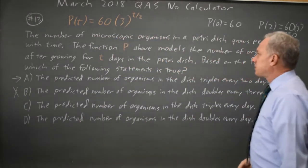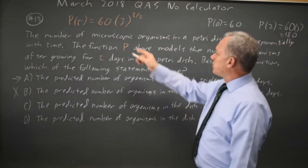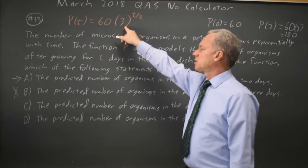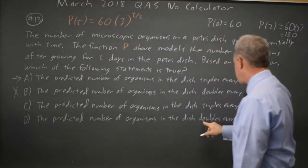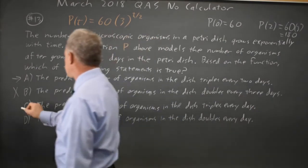C triples every day. Note that if T equals 1, we multiply by root 3, which is not quite triple, and it's also not quite double, so C and D are not correct.